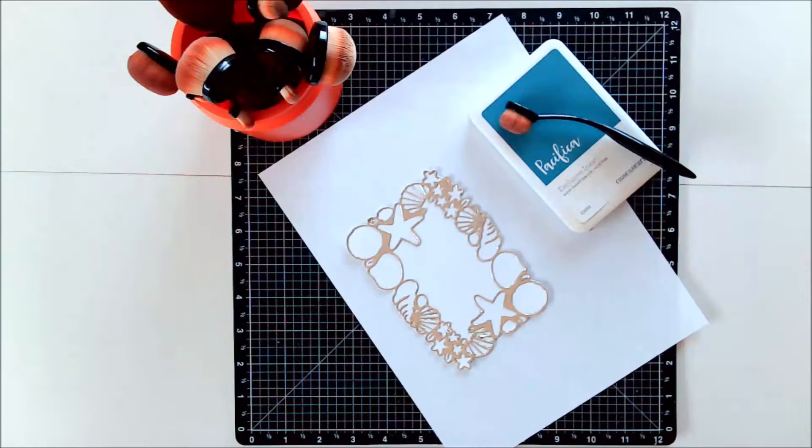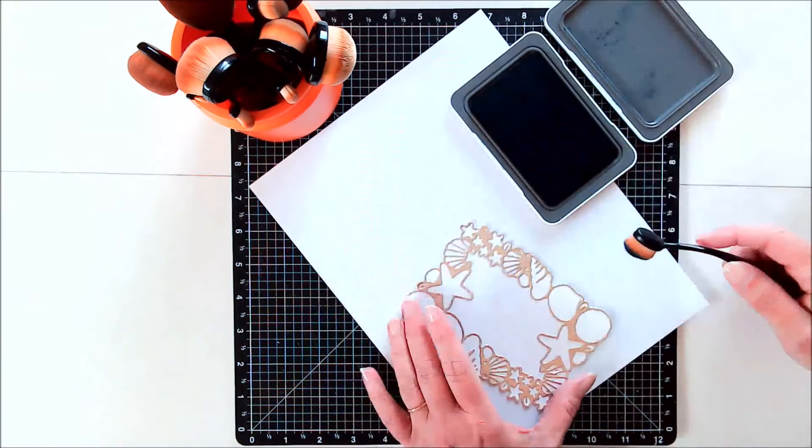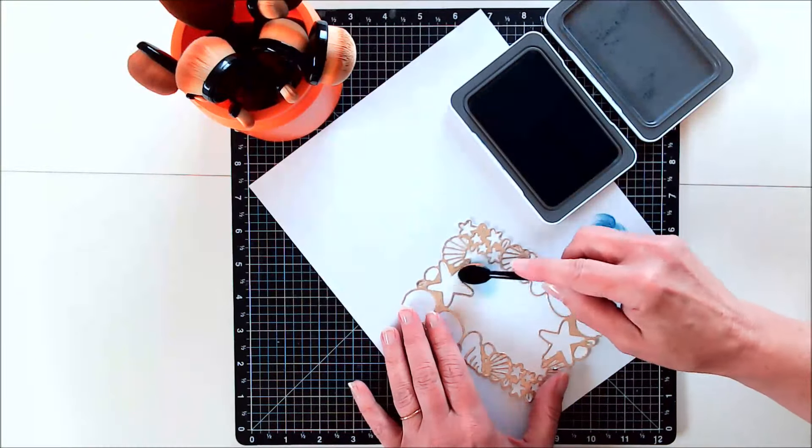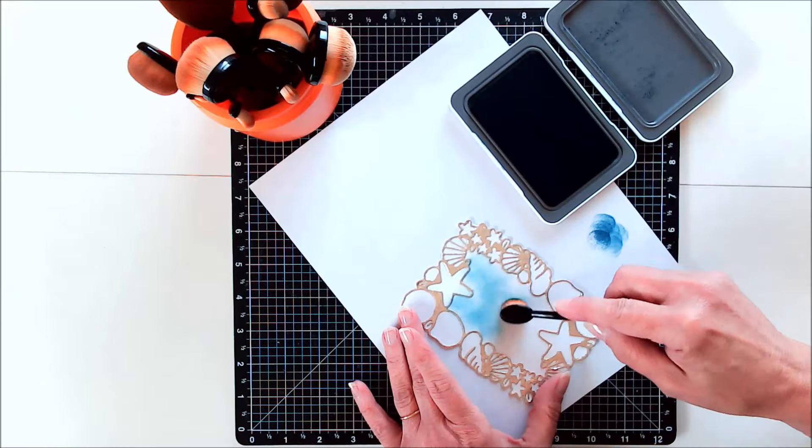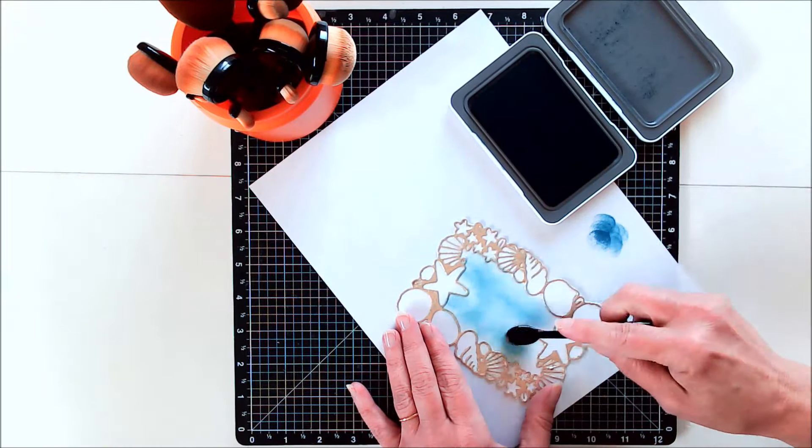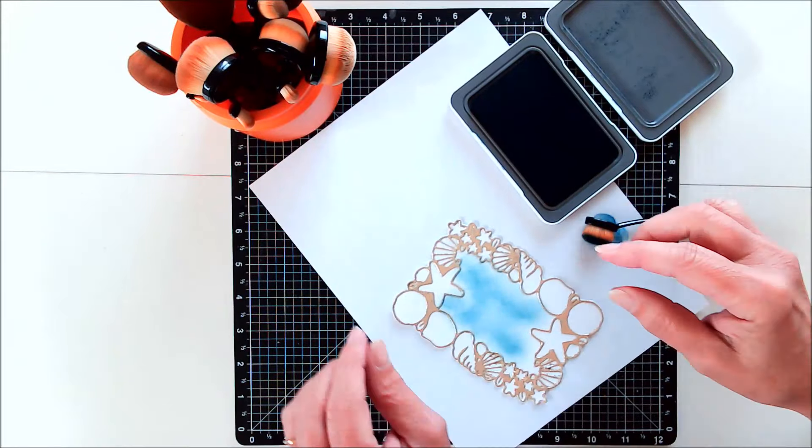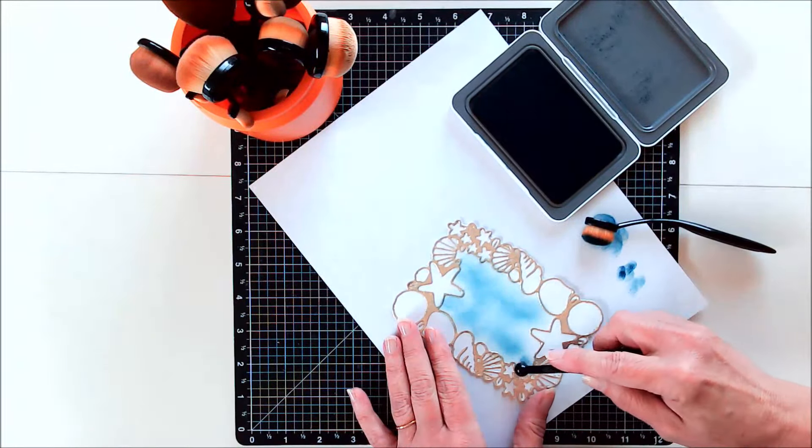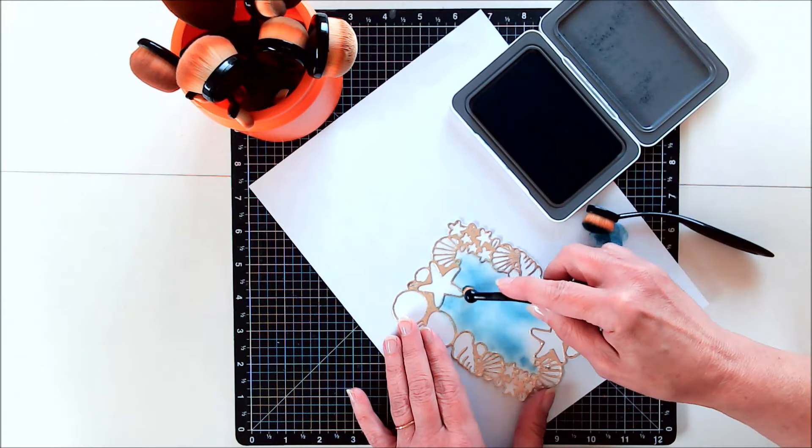Next, I'm going to be inking the center using Close To My Heart Pacifica ink and a blending brush. I would have preferred to use my distress inks, but they are still in storage, so I'm just going to have to work with what I have. And I'm just trying to create an ocean look, and I think it came out okay.